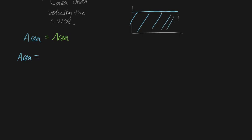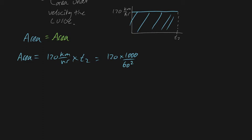Let's solve for the area under the blue curve. We stop at arbitrary time t2 when they supposedly meet, and the car's speed is 120 kilometers per hour. That's just a simple rectangle — base times height — which is 120 times 1,000 divided by 60 squared, times t2, which equals 33.33 recurring times t2. That's the distance the car has traveled in time t2.